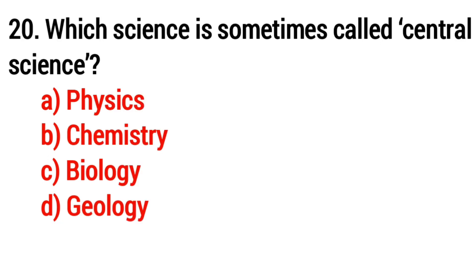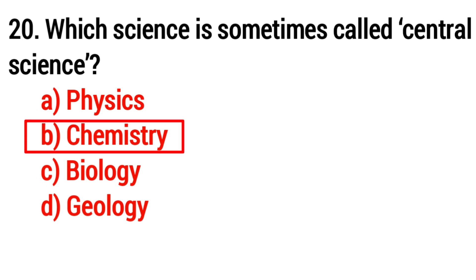Question 20: Which science is sometimes called the central science? The answer is Option B: chemistry.